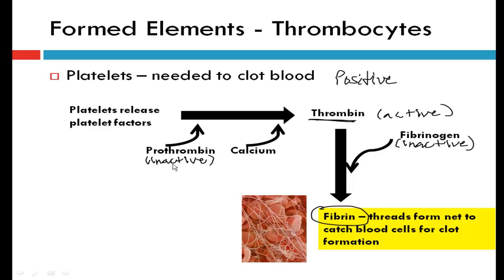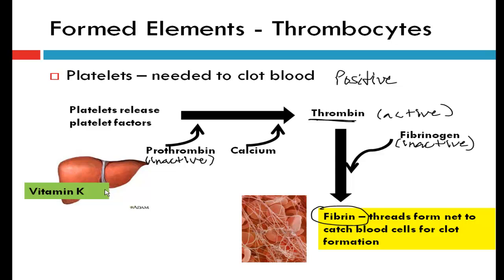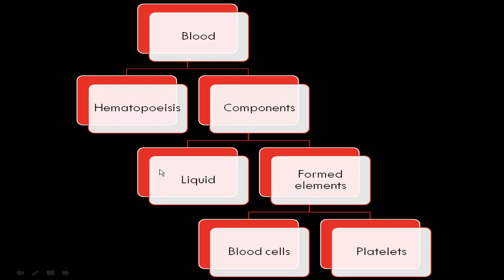Now, how do we actually produce prothrombin? It's synthesized from vitamin K in our livers. If we're low on vitamin K, we'll have trouble creating this blood clotting cascade — without it, we can't make prothrombin, which means we can't activate thrombin, and thrombin cannot convert fibrinogen into fibrin. To recap: we talked about hematopoiesis and the two types of blood tissues that make our blood cells, the liquid components of blood at 55%, and all of the formed elements at about 45%. I hope you found that helpful.